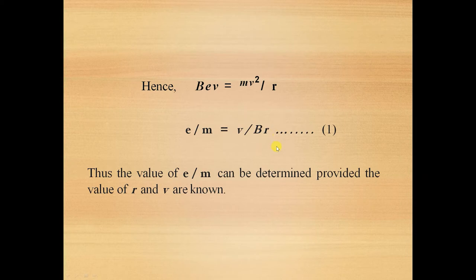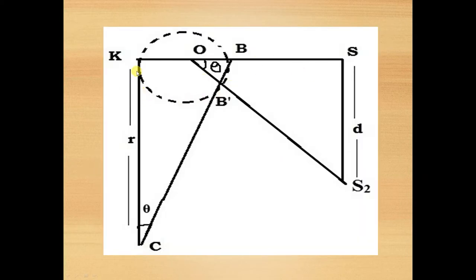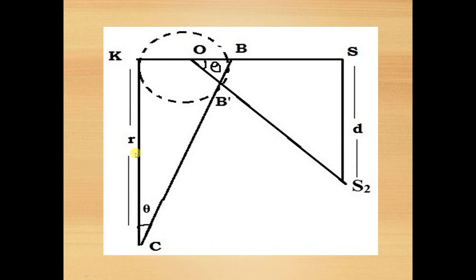We have discussed the trajectory of the electron path in the presence of a magnetic field, and the spot is formed at S2. Now we will make use of some geometry to obtain the value of R by a geometrical method. In this particular diagram, the arc of the circle is shown, and KC (or R) is the radius of the arc of the circle which we are going to measure. D is the displacement of the spot when a magnetic field is applied.